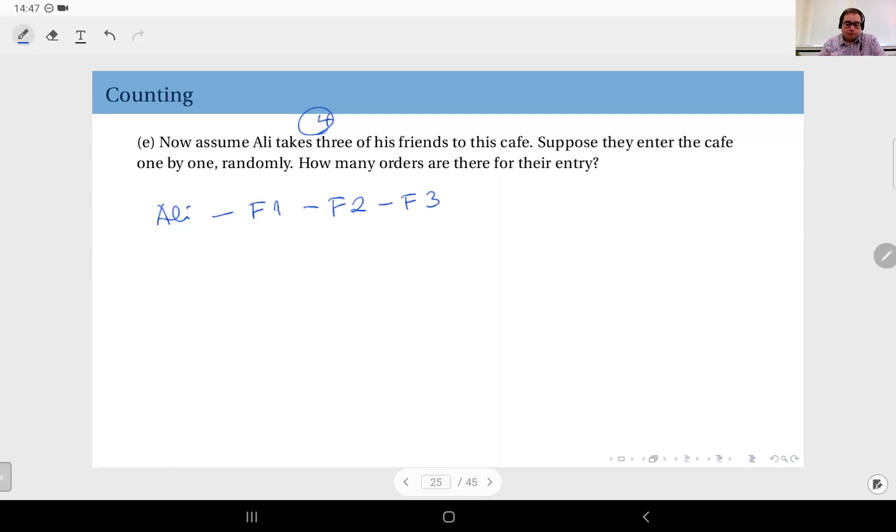Or for instance, friend number one enters first, and then Ali, and then friend number three, and then friend number two. This is another order. You see, intrinsically here we cannot reuse people.